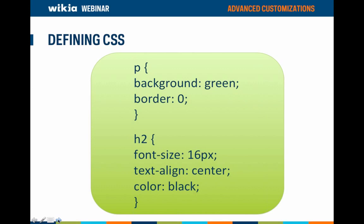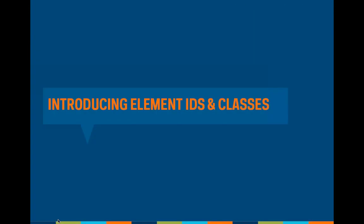Here we added another selector with corresponding declarations. You can see we're now adding CSS for both paragraph and h2 headers, which are section headers on your wiki. When you define CSS for an HTML element, it is applied to all cases of that element across your wiki. So if all h2 headers are set to blue, they will appear blue on all pages — whether a user page, your main page, or an article page.